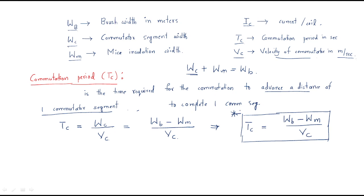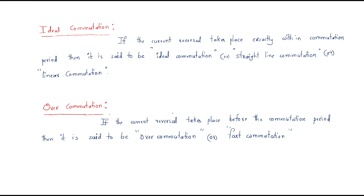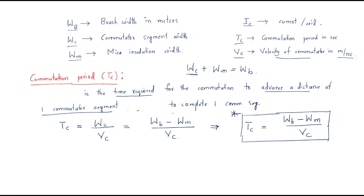In simple terms, the commutation period is the time required for the brush to complete one commutator segment. The exact typical value of commutation time is 2 milliseconds, i.e., 2 × 10⁻³ seconds.